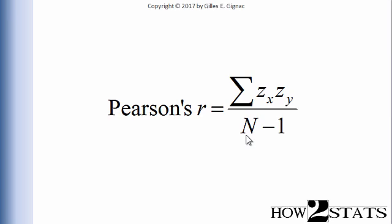Once you start to get up to a sample size of 50 plus, the n minus 1 doesn't have much of an impact on the value of Pearson's r. So in summary, Pearson's r is the sum of the products of z-x times z-y divided by n minus 1.